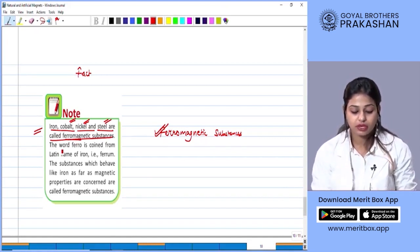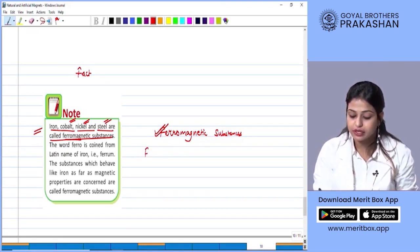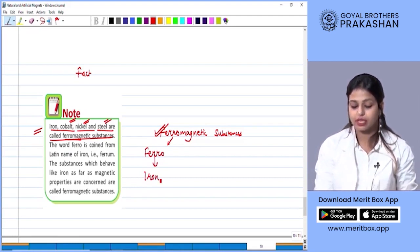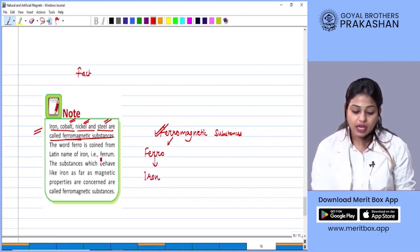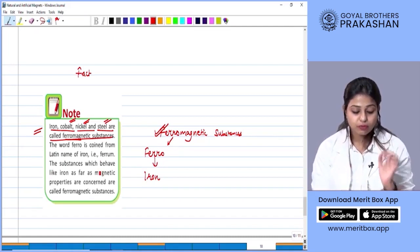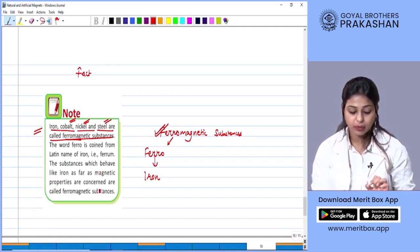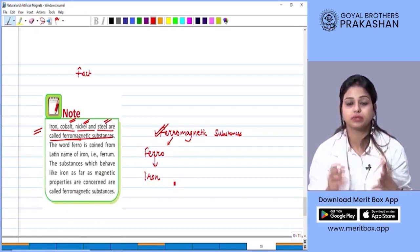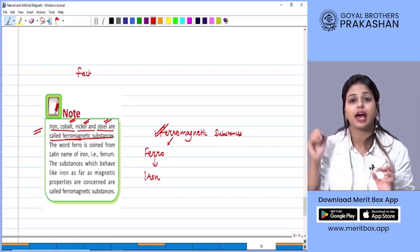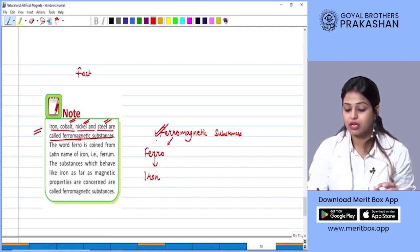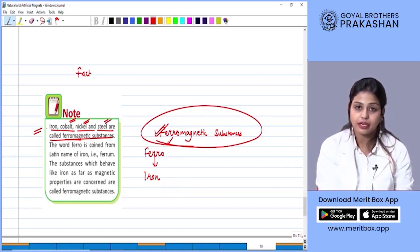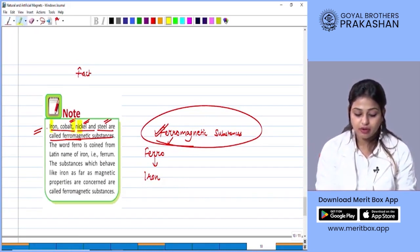The word ferro is combined with the Latin name of iron. So ferro is derived from a Latin term that means iron. And the substances which behave like iron as far as magnetic properties are concerned are called ferromagnetic substances. So if a substance behaves like iron, they are called ferromagnetic substances. So which are those substances? Iron, cobalt, nickel and steel. Okay students?